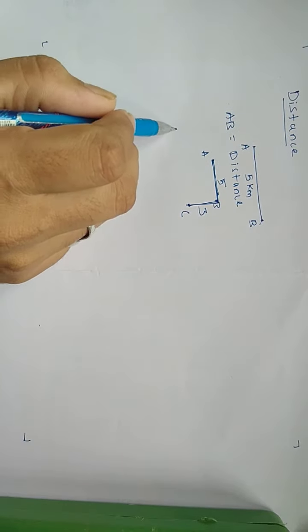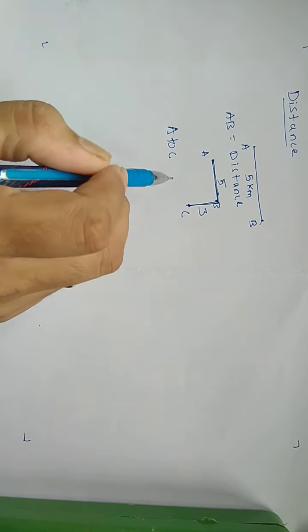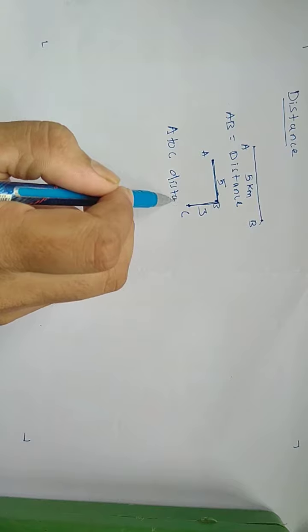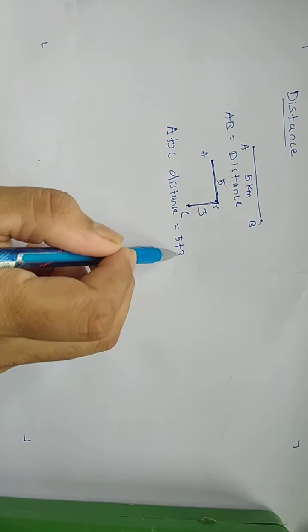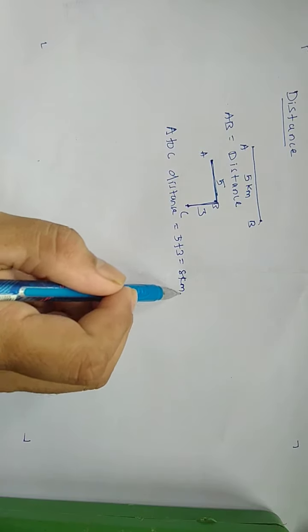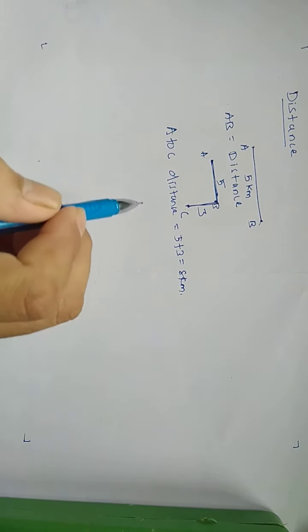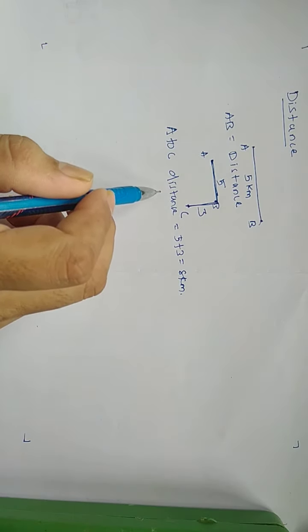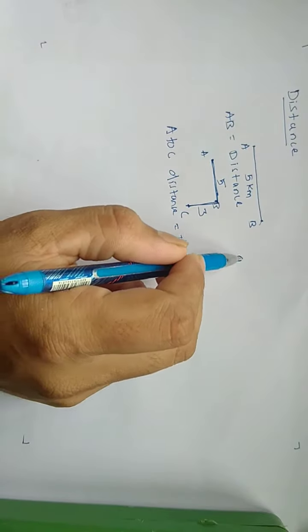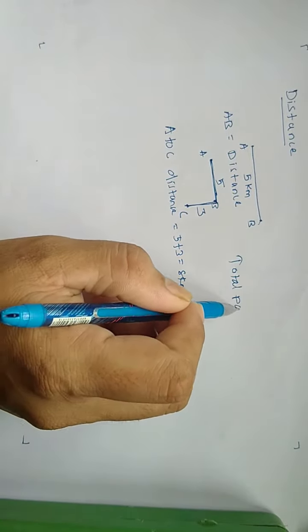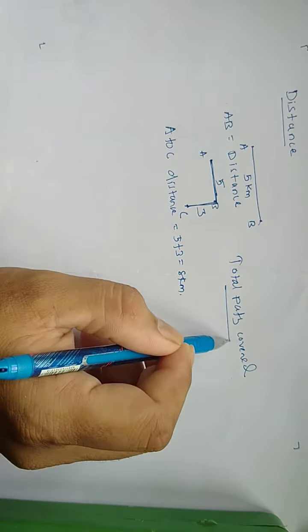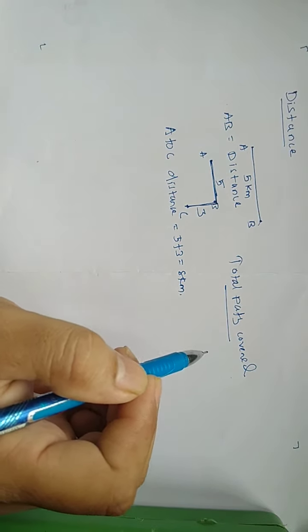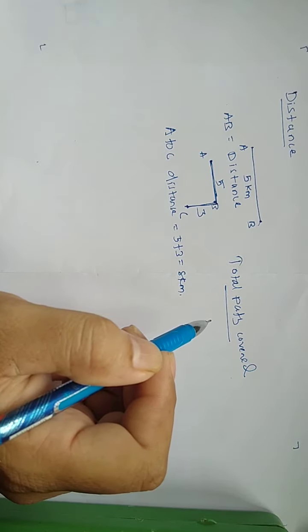That is your total distance from A to C. So this is your total path covered by the body or the person. This is called the distance.